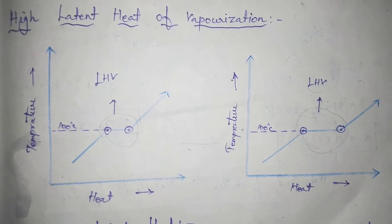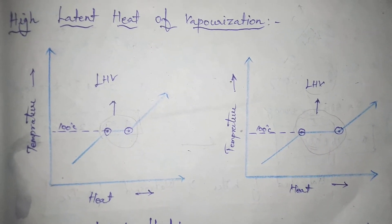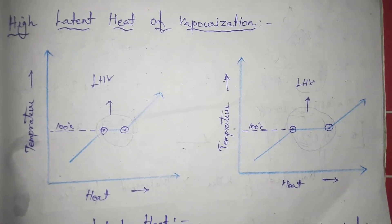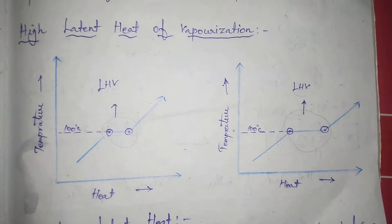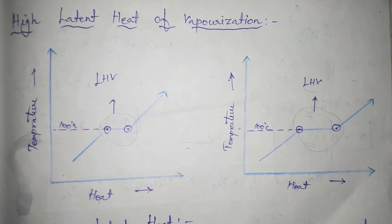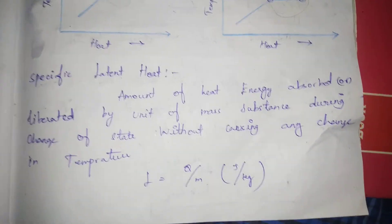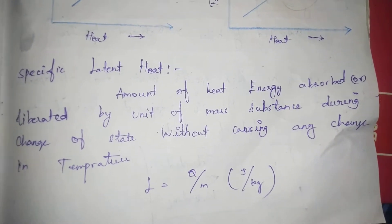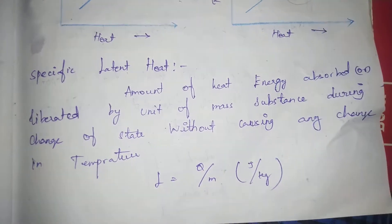This is how the latent heat of vaporization changes. I will show you the basics of heat for this chapter. I will explain what specific latent heat is. This is the specific latent heat definition.